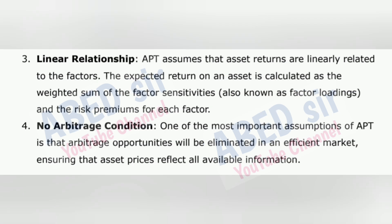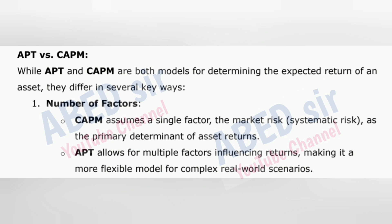3. Linear relationship — APT assumes that asset returns are linearly related to the factors. The expected return on an asset is calculated as the weighted sum of the factor sensitivities (also known as factor loadings) and the risk premiums for each factor. 4. No arbitrage condition — one of the most important assumptions of APT is that arbitrage opportunities will be eliminated in an efficient market, ensuring that asset prices reflect all available information.